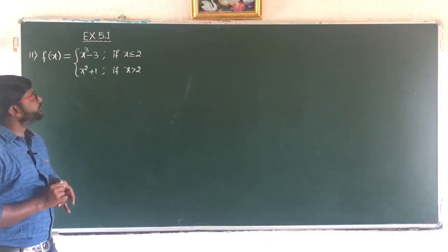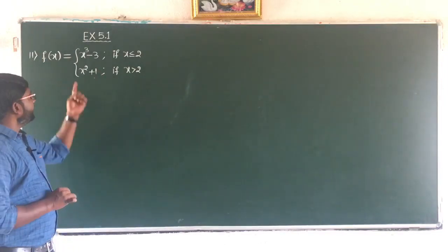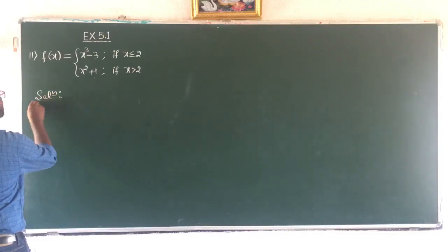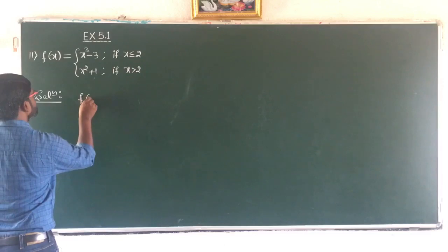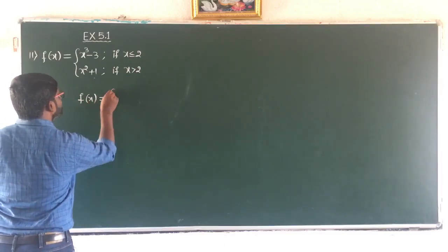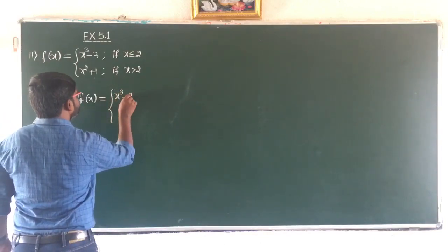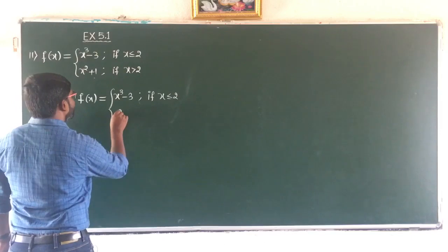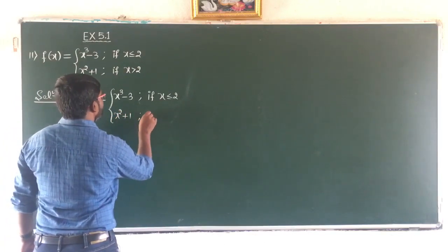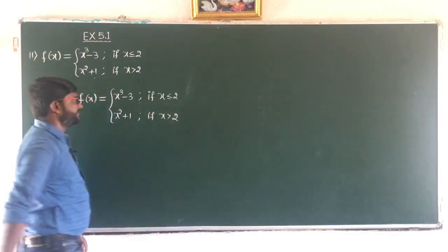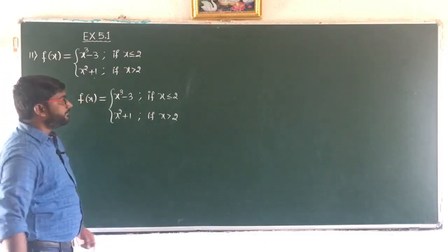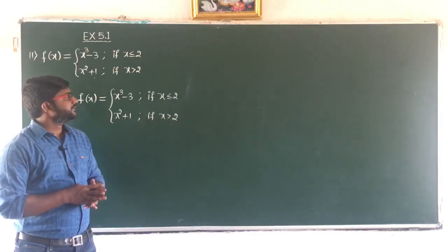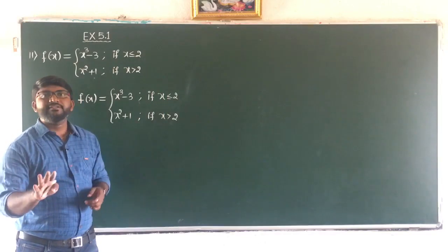The 11th problem: f of x equals x cube minus 3 if x less than or equal to 2, and x square plus 1 if x greater than 2. Again we get three cases: c less than 2, c equal to 2, and c greater than 2. The function will be continuous for c less than 2 and c greater than 2, and we have to check the continuity at c equal to 2.